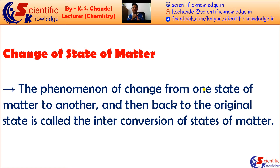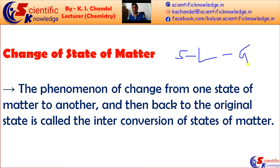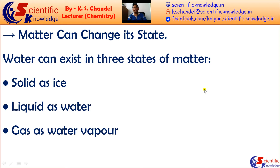We have three states of matter: solid, liquid, and gas. The phenomenon of transition from one state of matter to another, and then back to the original state, is called conversion of state of matter. Matter — anything which has mass and occupies space — has a state of matter and can change its state. There are two major factors: first, temperature; second, pressure.